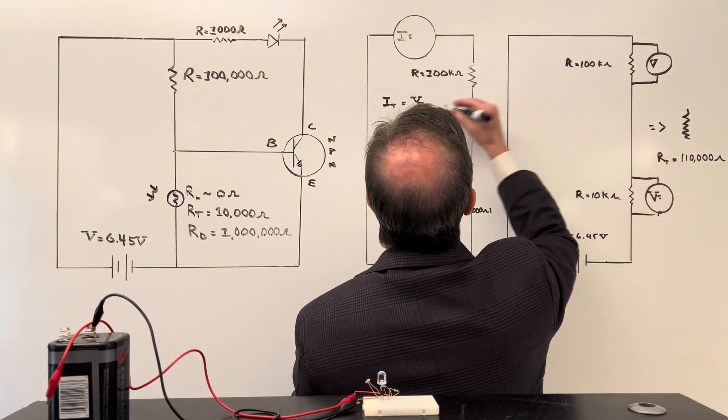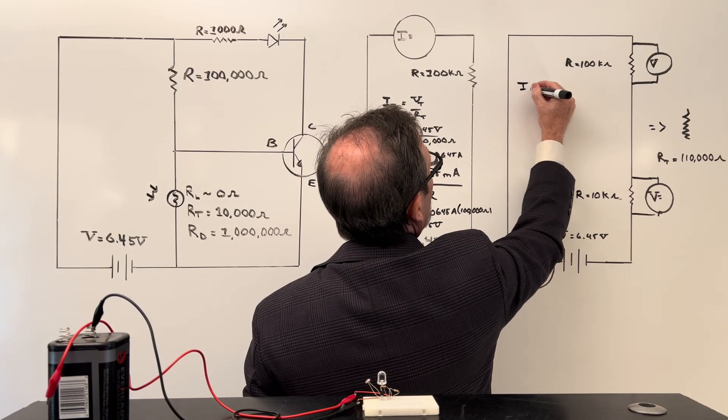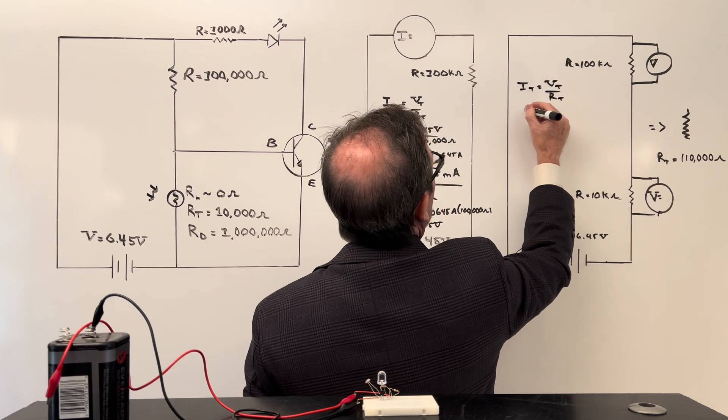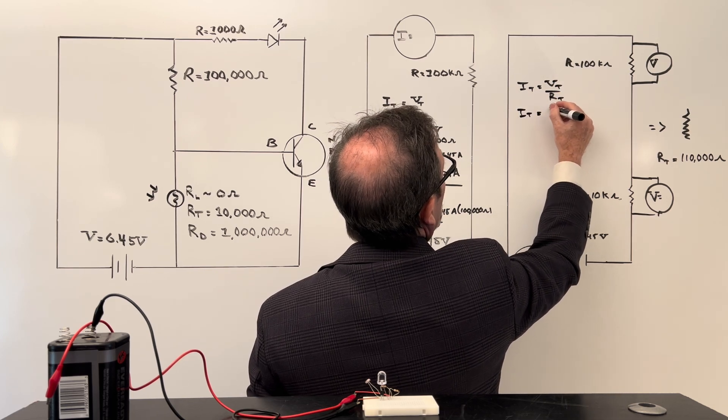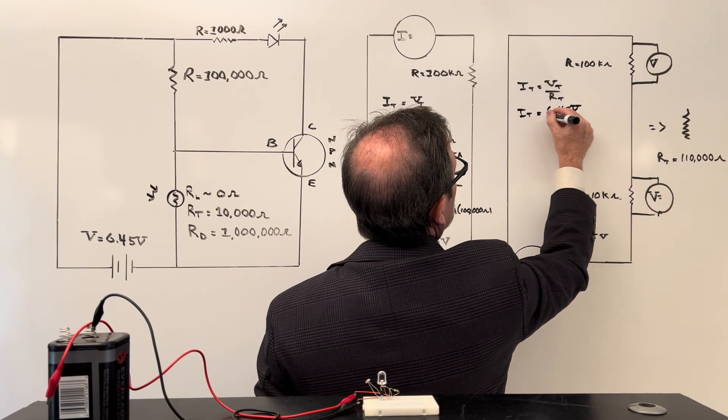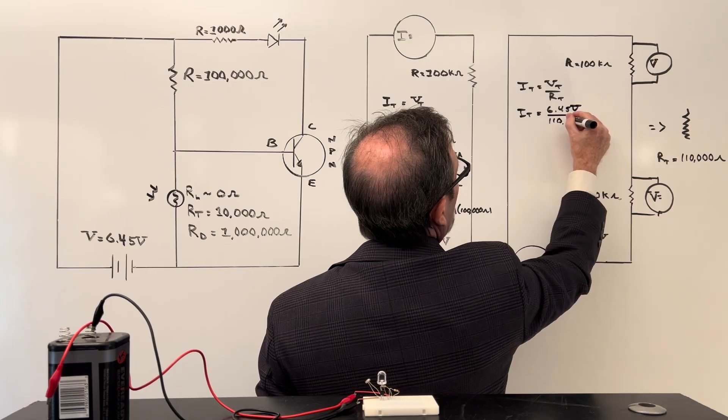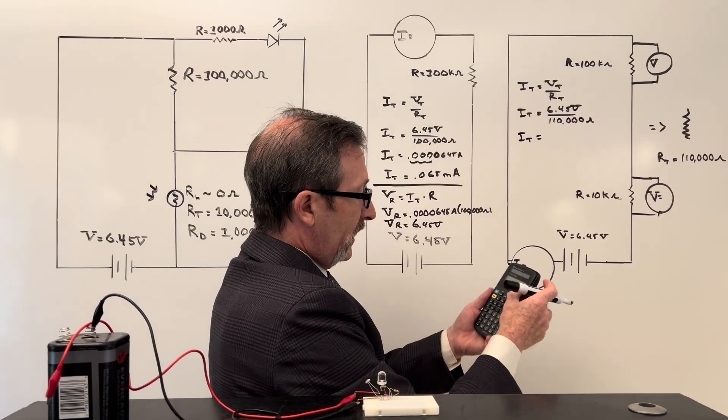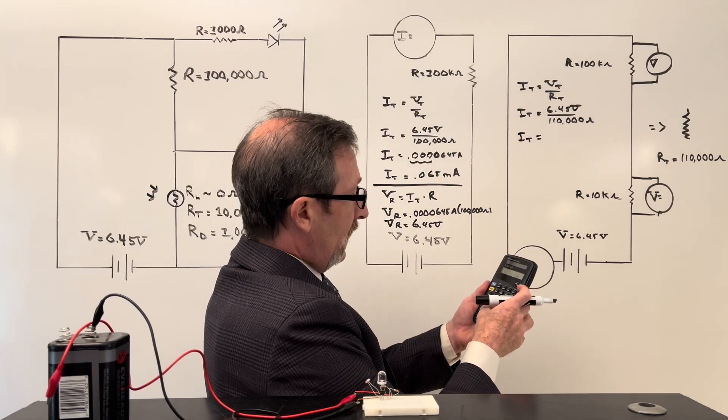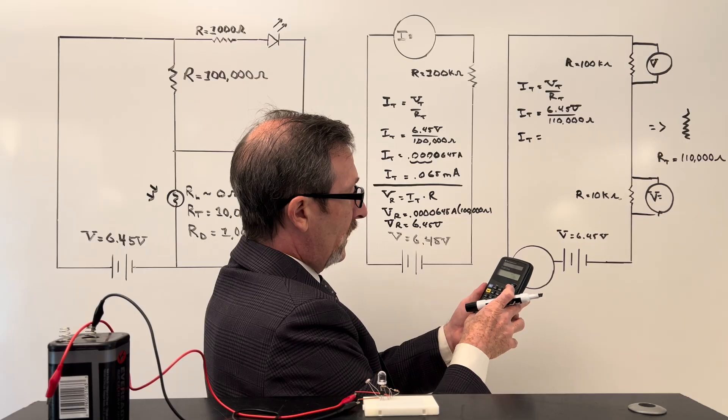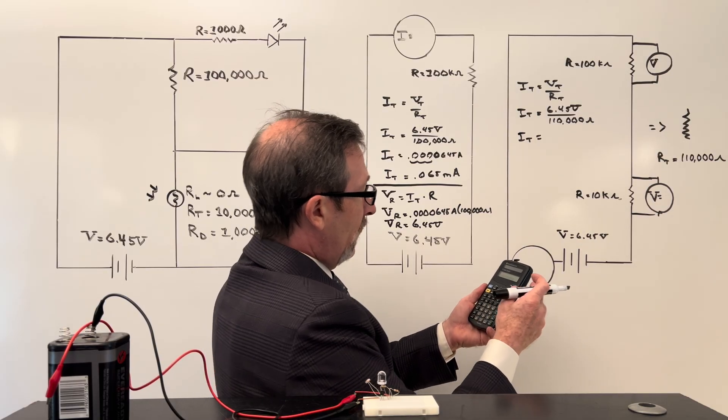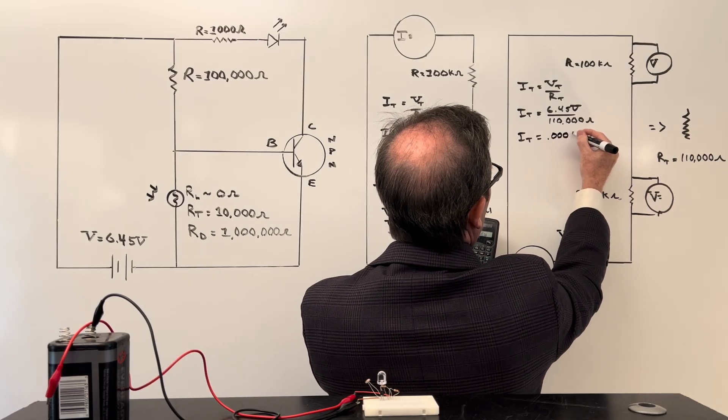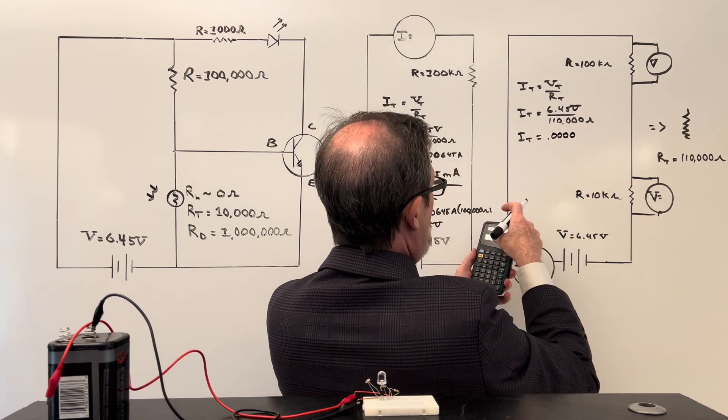Let's do this very quickly. I know that my total resistance there, I'm just going to do exactly what I did here. My I total is equal to my voltage total divided by my resistance total. I total equals our 6.45 volts divided by 110,000 ohms. And I can already see that I don't think it's going to light.